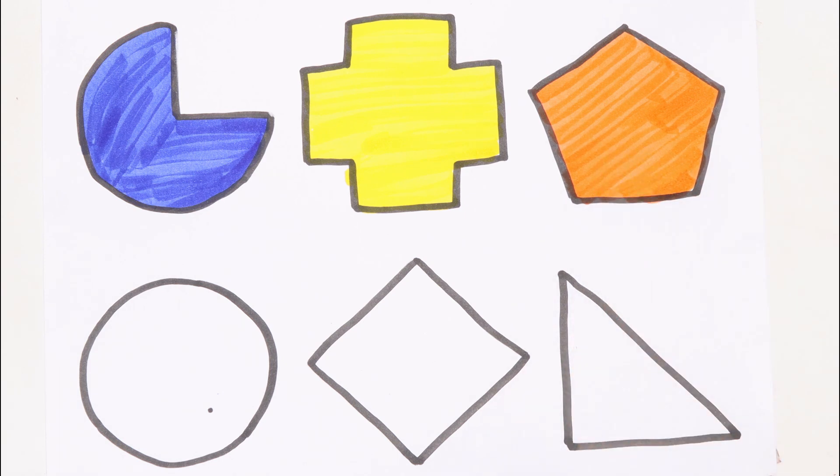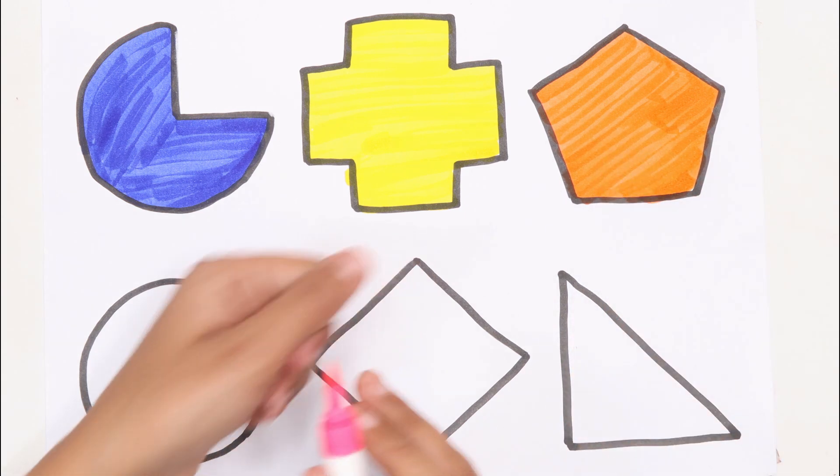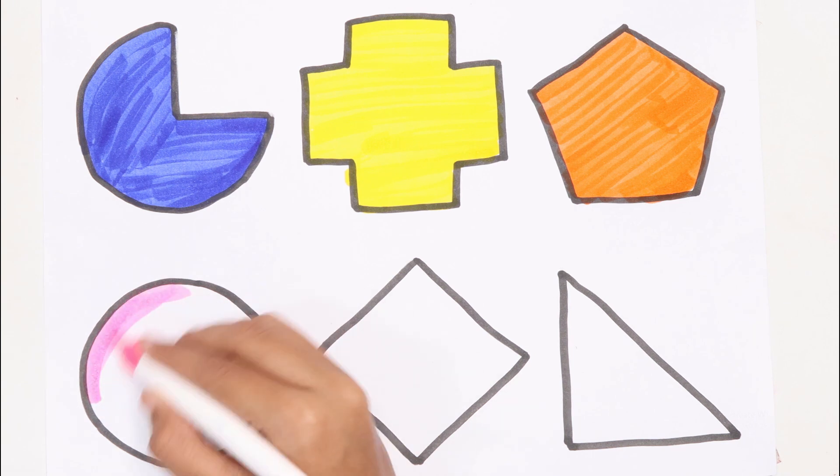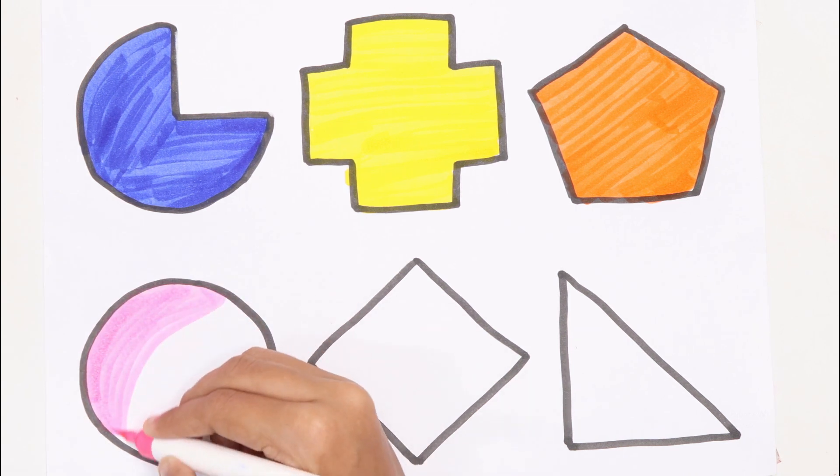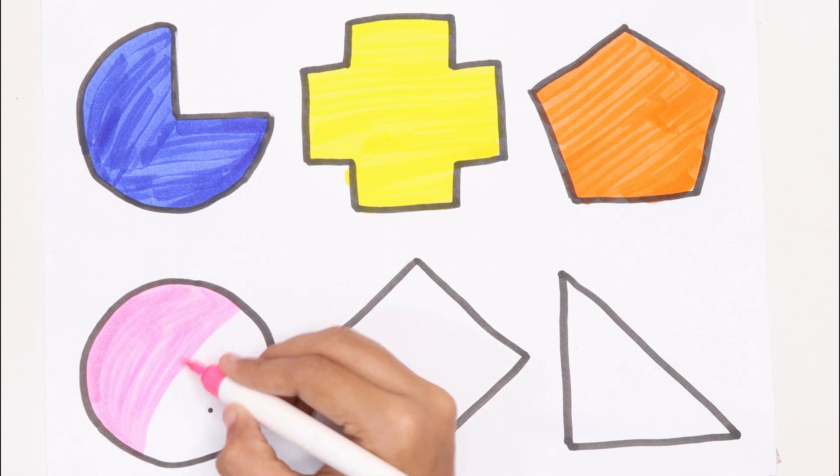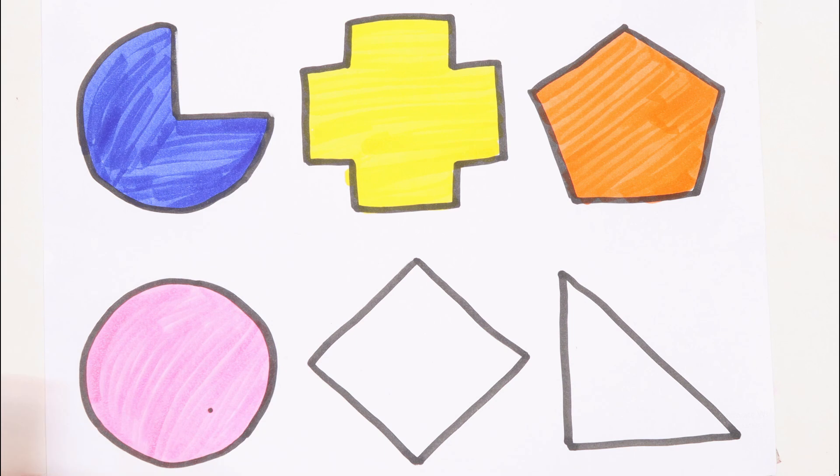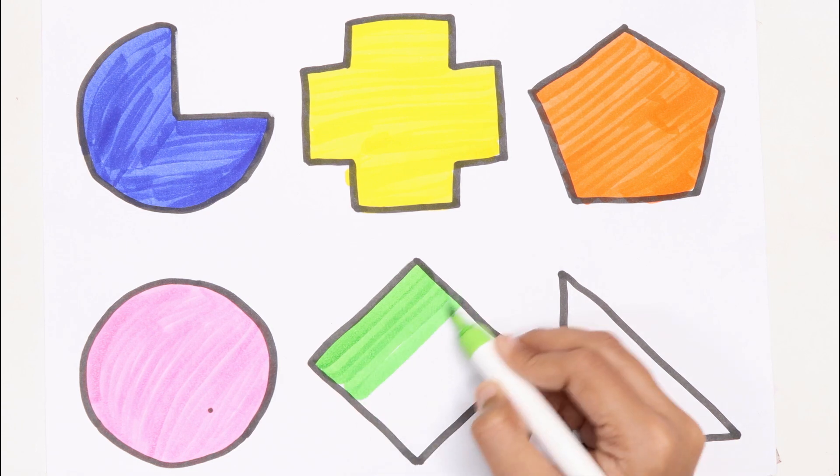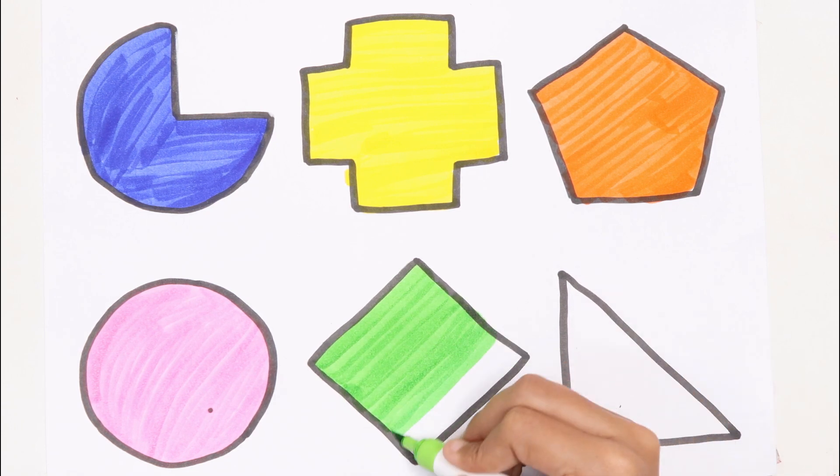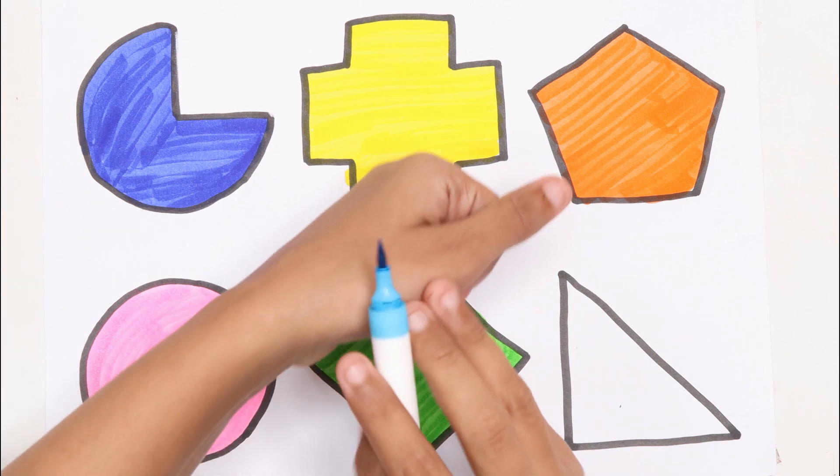Pentagon pink color. Circle green color. Rhombus sky blue color.